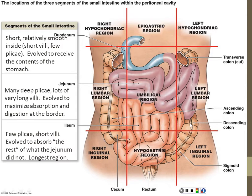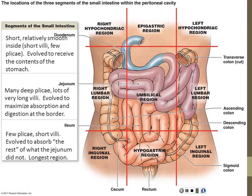The ileum is the longest region. Its job is to pick up whatever the jejunum didn't absorb — about 90% of nutrients get absorbed by the jejunum, and the remaining 10% gets picked up in the longer ileum. The ileum is more folded than the duodenum but much less folded than the jejunum — it has short villi and fewer plica circularis, but its length gives it more surface area. Then we get into the large intestine.